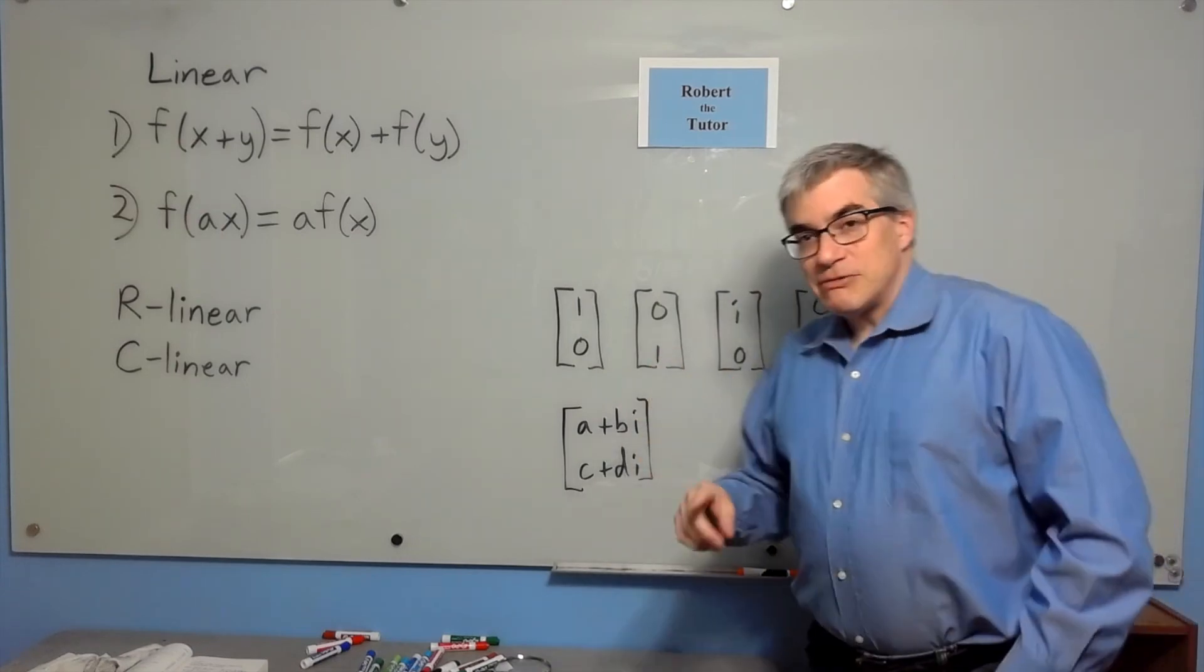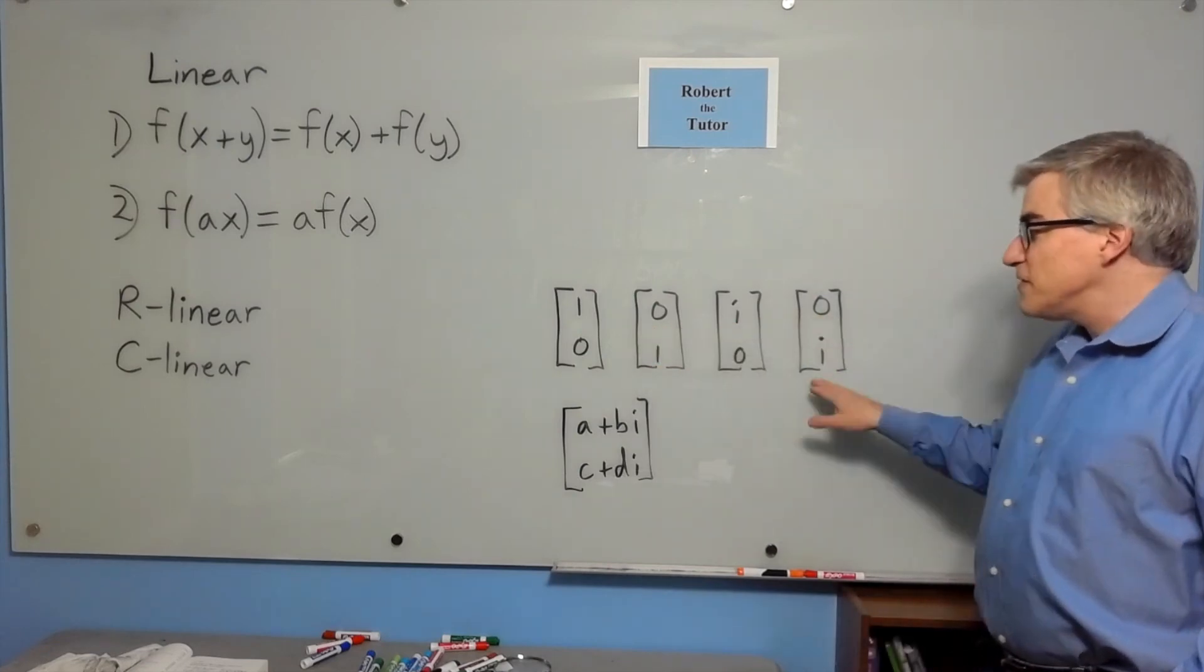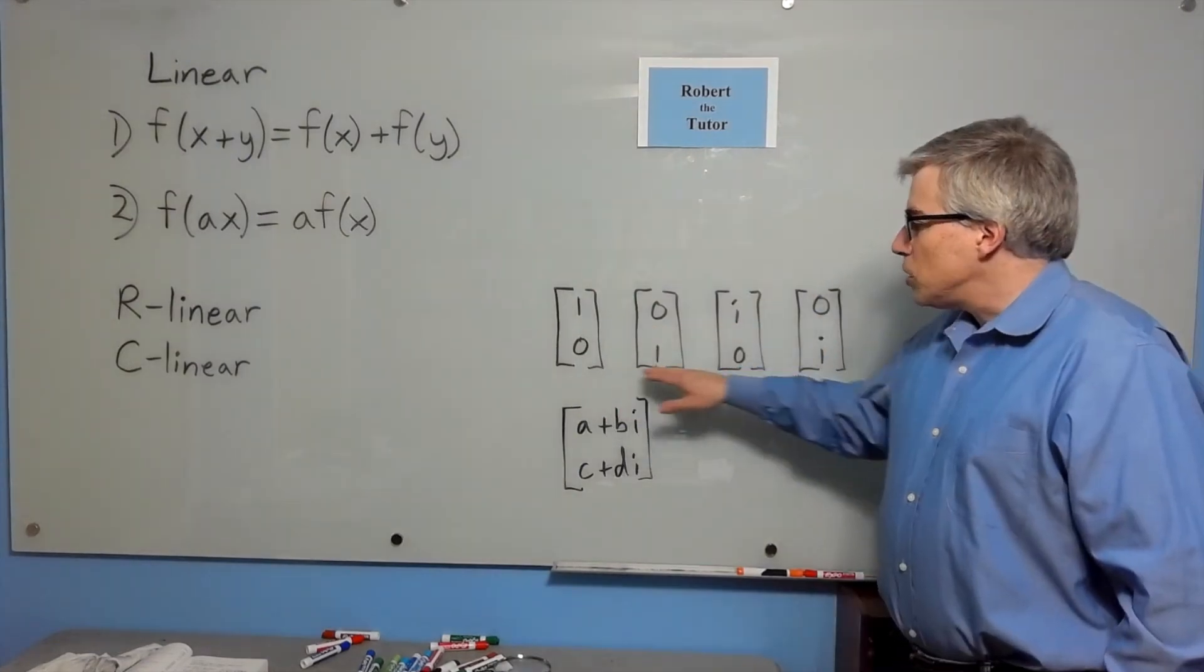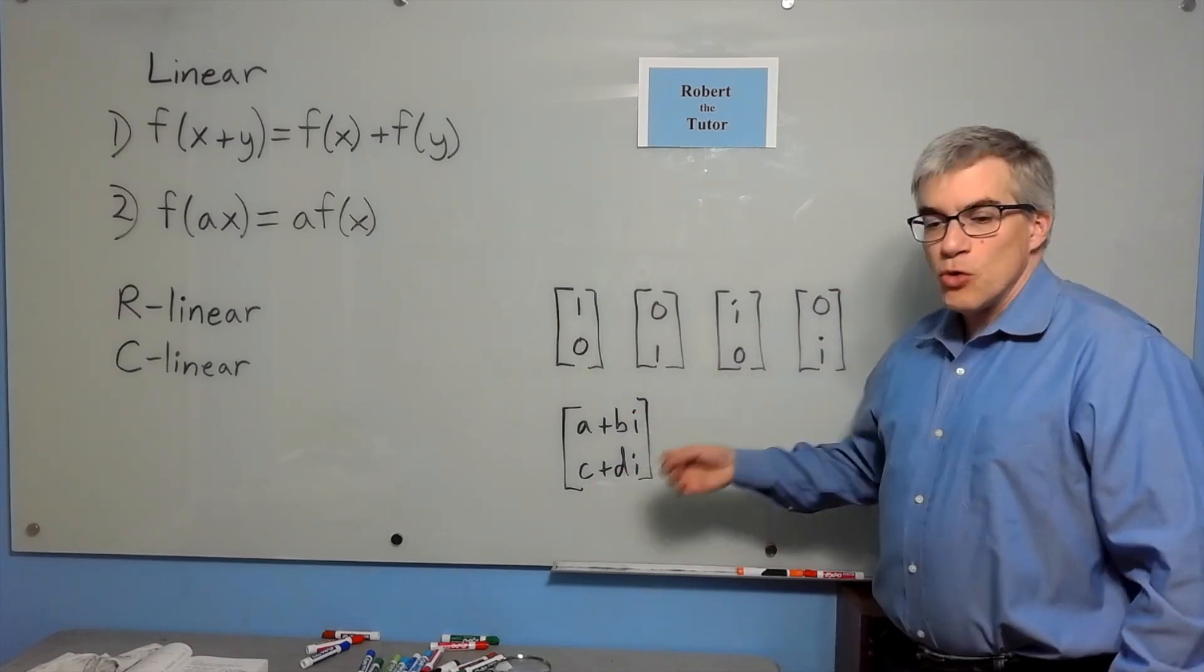But if you're only allowed to have real coefficients, the space is four-dimensional because all of these are different. They are all linearly independent in the space of complex two-dimensional vectors over R.